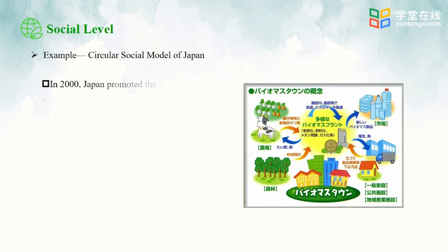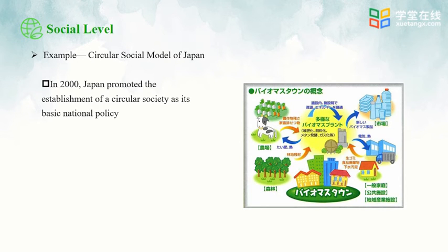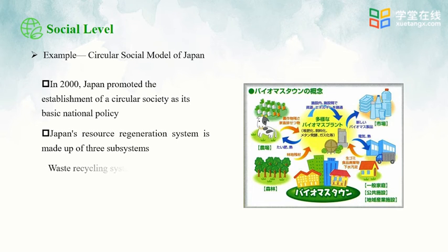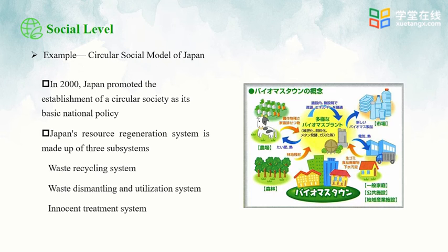For the big cycle at society level, we can learn a lot from the circular society model of Japan. In 2000, Japan promoted the establishment of a circular society as its basic national policy. As shown in this figure, its system of renewable resources is composed of three subsystems: a waste recycling system, a waste dismantling and utilization system, and an innocent treatment disposal system.